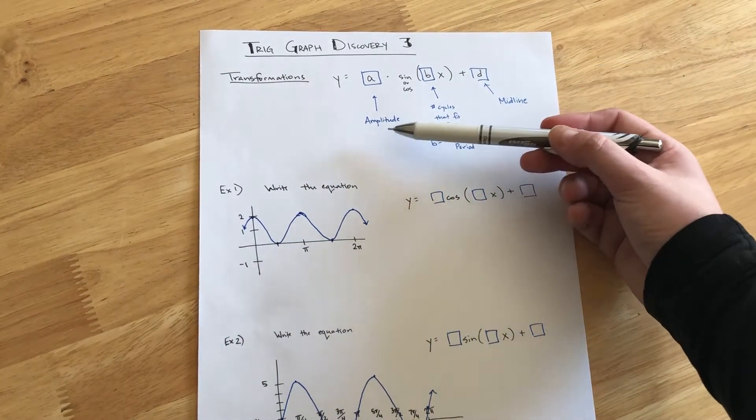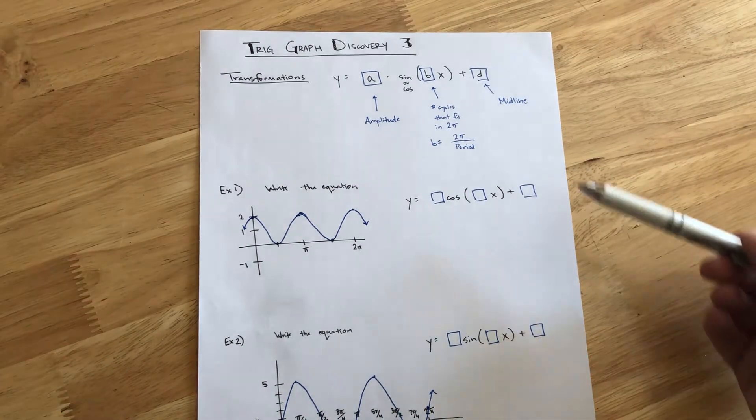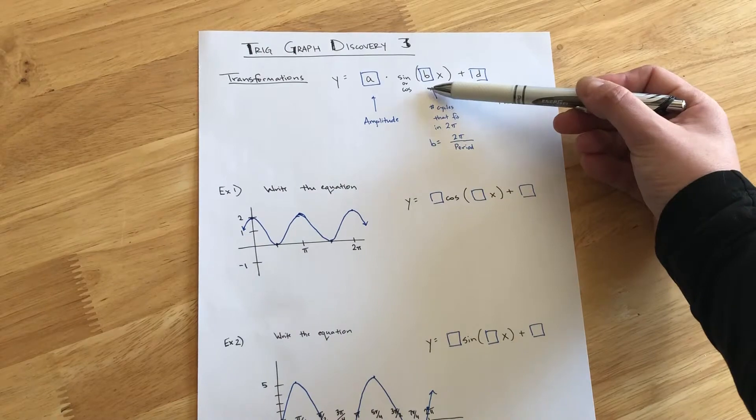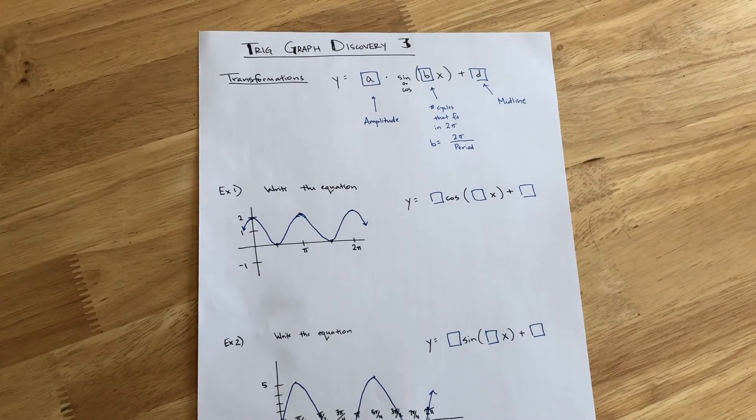Quick reminder, that A parameter is the amplitude. The D parameter on the end, that's our midline, and then the B parameter is the number of cycles that fit in the space of 2π.